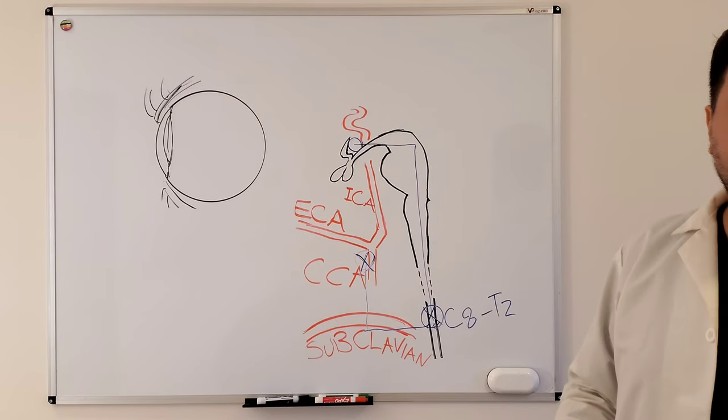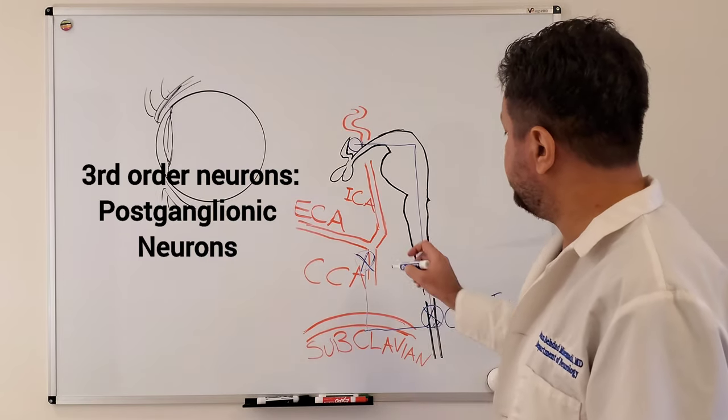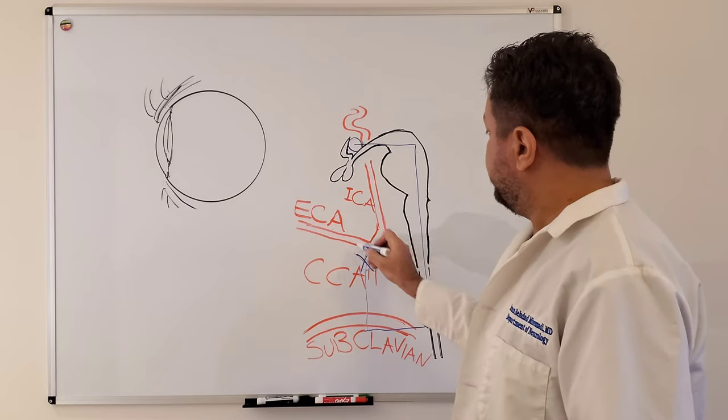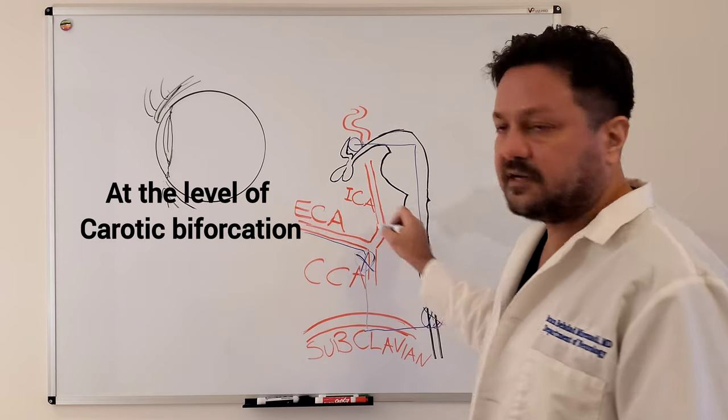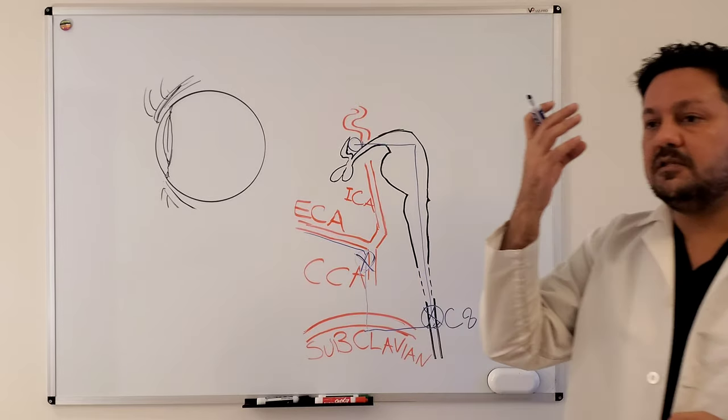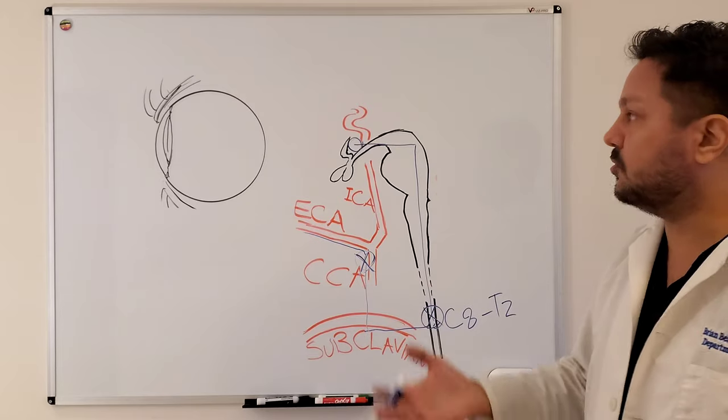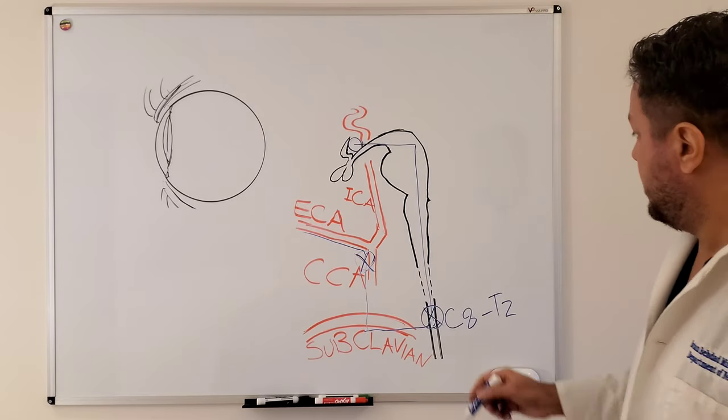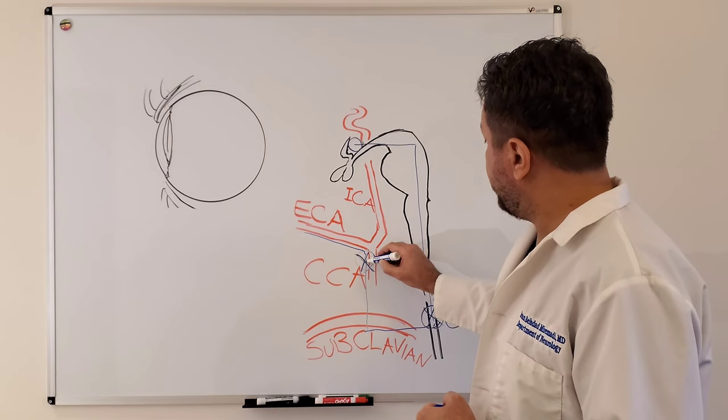And so the second synapse—and then the third order of neuron or the postganglionic neuron will arise from this location. We're going to have two branches. The first branch will travel alongside the external carotid artery and it will go to the face, and that's the pathway that controls the hidrosis, or in Horner syndrome anhidrosis, inability to sweat.